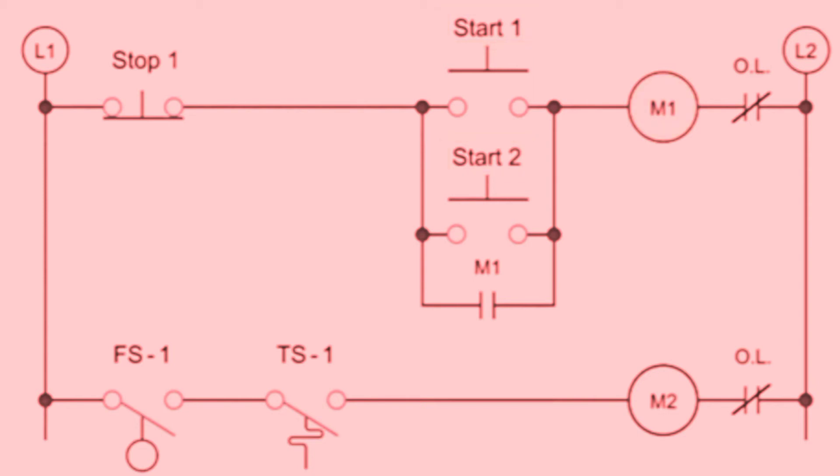Thus, motor coil M1 can be energized by manually pressing start switch 1 or start switch 2.